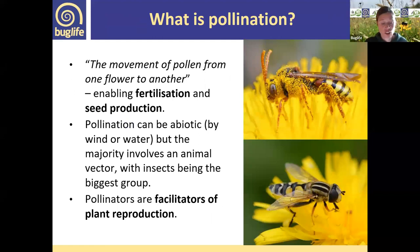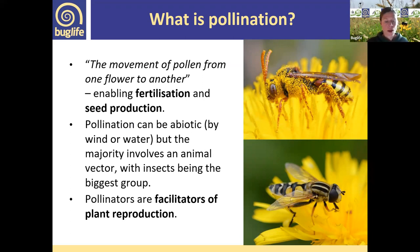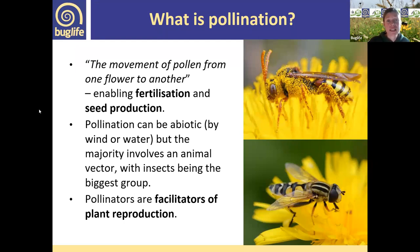What is pollination? Essentially, it is just the movement of pollen from one plant to another. Plants can't move, so require a little help in their reproduction. Pollination can be via the wind — many of our trees are wind pollinated — or via water, but by far the biggest group is via animals, and the biggest group of animals is insects. So pollinators are facilitators of plant reproduction, and recent estimates are that 80% of our British wild plants are actually pollinated by insects.